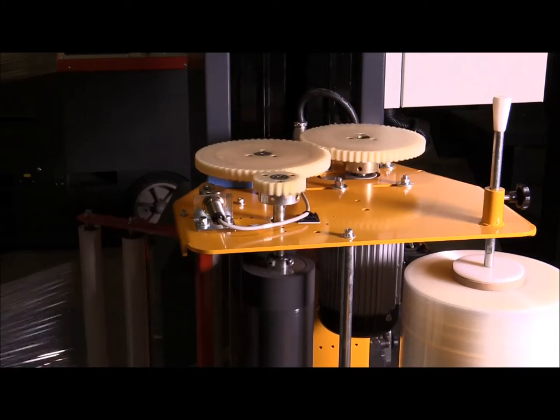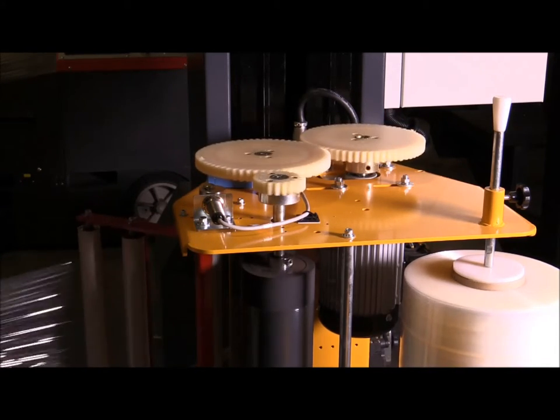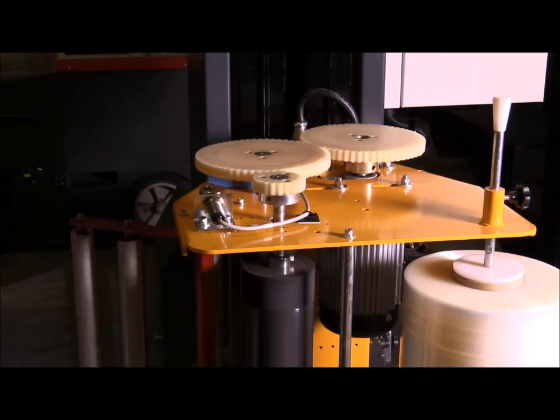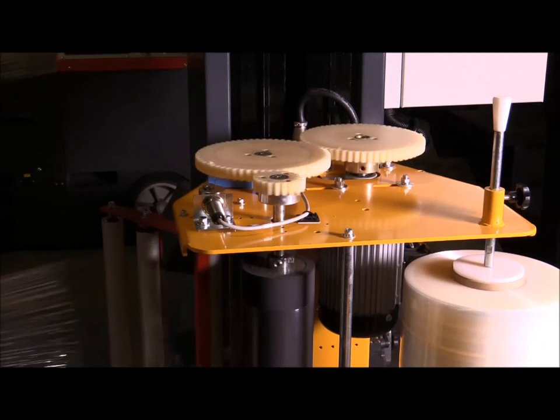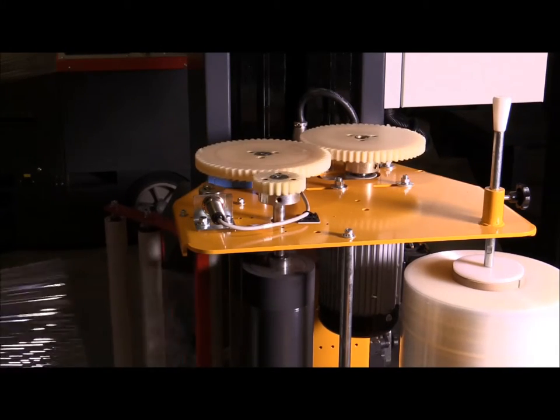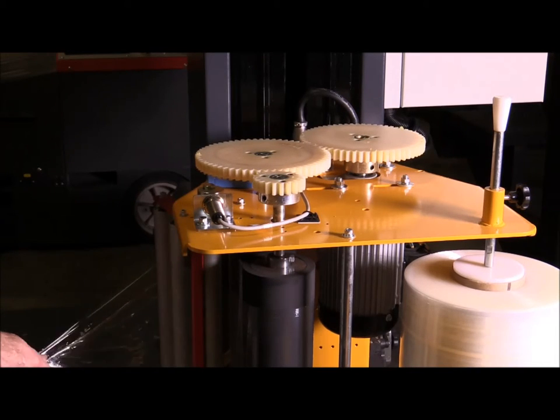Now the gears on this system are set to stretch this film 240%. So as the film passes over those two black rollers, it's stretching it 240% before it feeds it out onto the pallet.